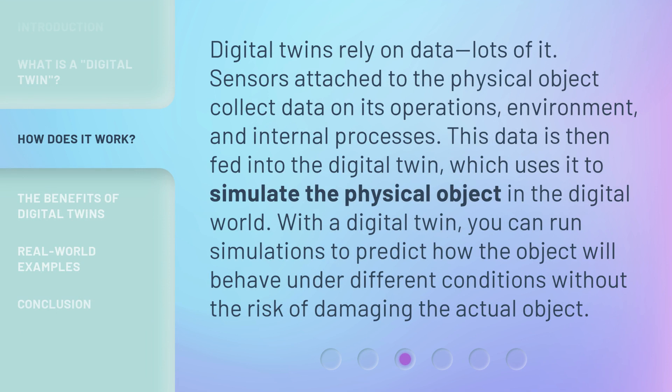Digital twins rely on data — lots of it. Sensors attached to the physical object collect data on its operations, environment, and internal processes. This data is then fed into the digital twin, which uses it to simulate the physical object in the digital world. With a digital twin, you can run simulations to predict how the object will behave under different conditions without the risk of damaging the actual object.